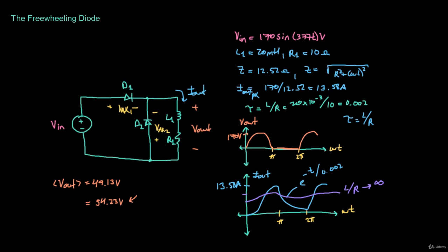So far we've looked at how we can implement inductors to improve the output current. Next we're going to take a look at how we can use capacitors to improve the output voltage.